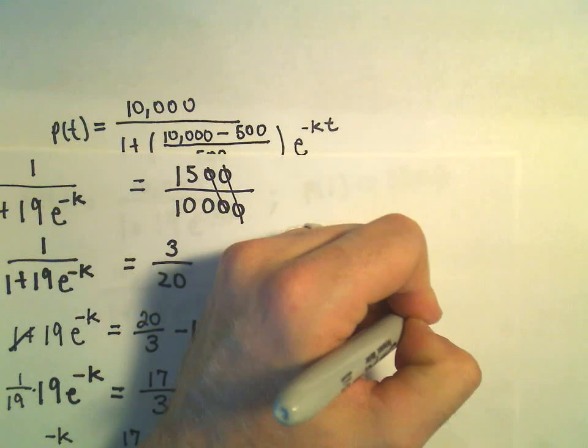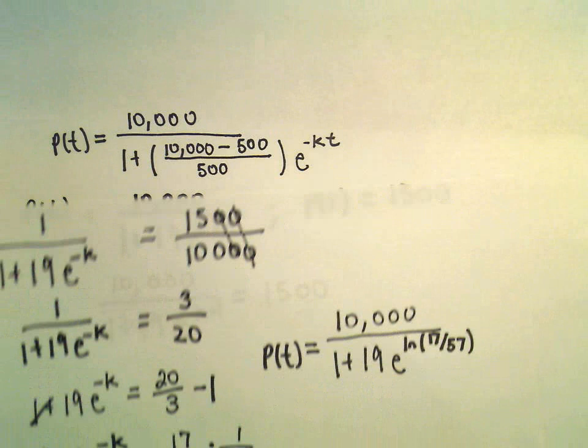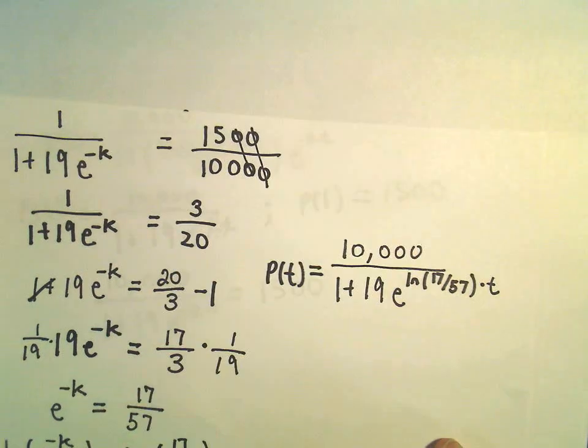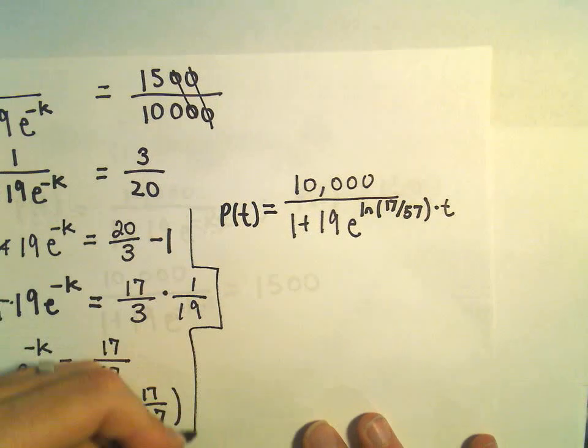So we'll have the natural logarithm of 17 over 57. And that's all being multiplied by t. Okay, so I think we can clean this up a little bit more as well here.